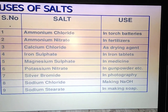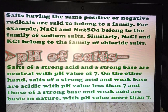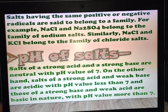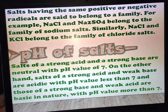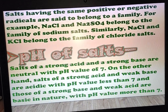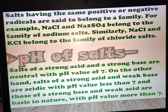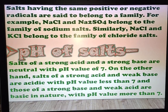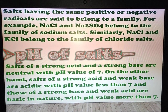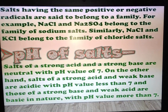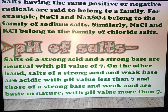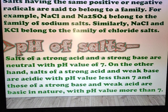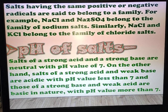Other uses include making NaOH and making soap. Now, what is salt? A salt consists of a positive cation and a negative anion. Radicals that belong to the same family — for example, NaCl and Na₂SO₄ both contain Na⁺, so they belong to the family of sodium salts. Similarly, NaCl and KCl both contain Cl⁻, so they belong to the family of chloride salts.